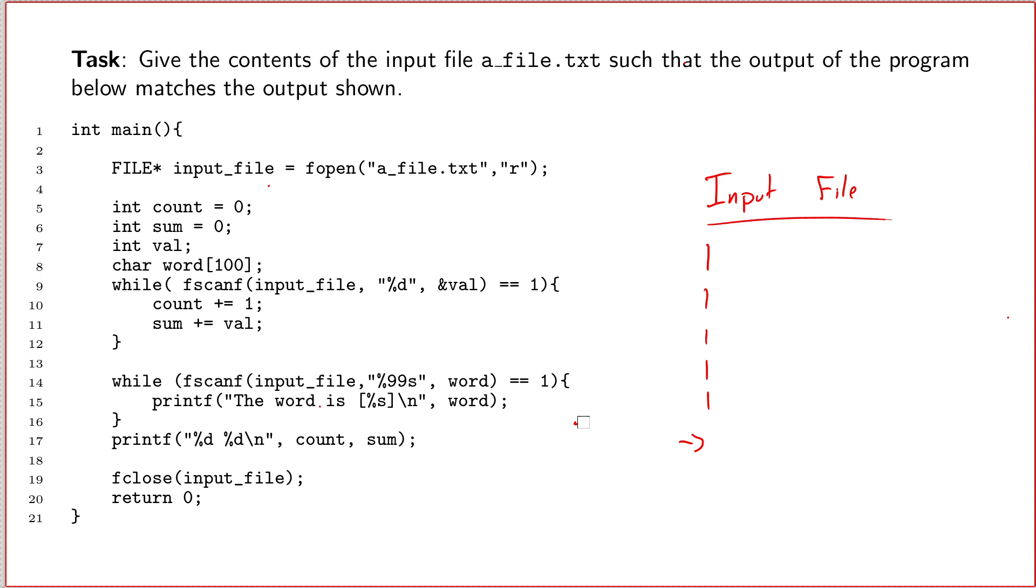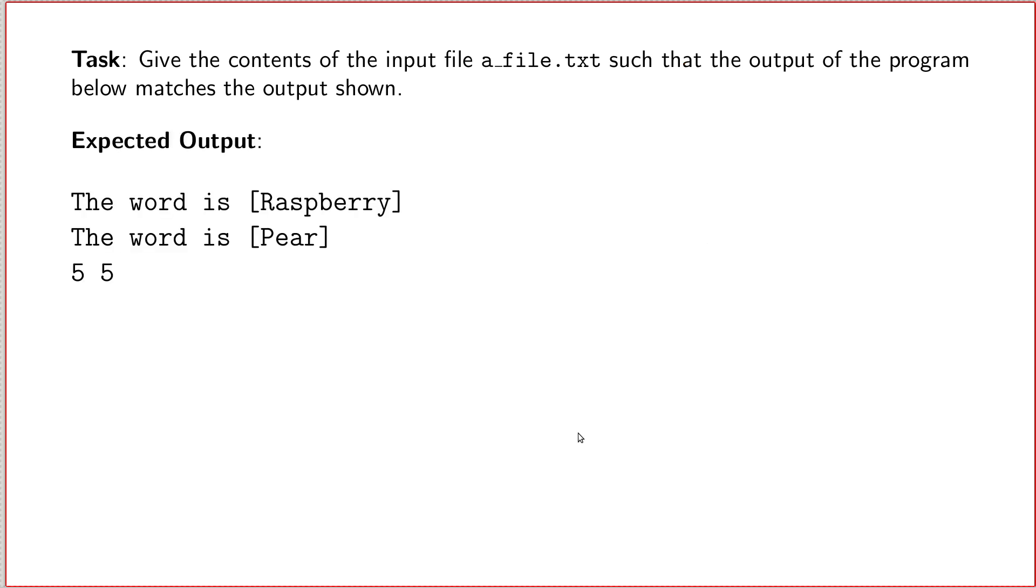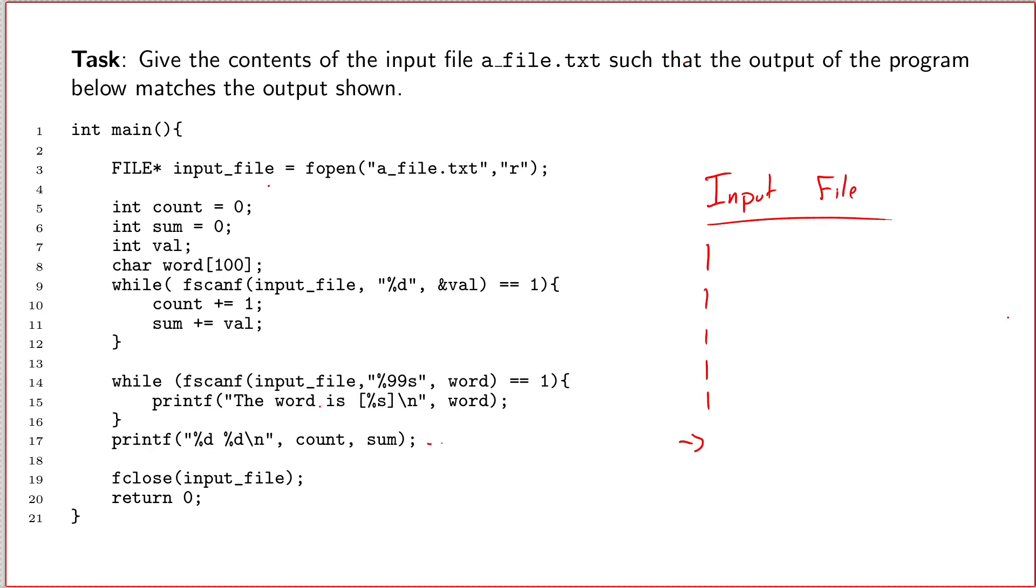And so after it reads the numbers, after it gets out of this first loop, it enters a second loop where it keeps trying to read strings of text, up to 99 characters long, and then it prints them out. It prints them in square brackets so we can see exactly how many characters it ended up reading. And it reads the word raspberry, with a capital R, and it reads the word pear, with a capital P, and then it stops. Then it's over, because then we print out this count and sum that we'd saved up from before.